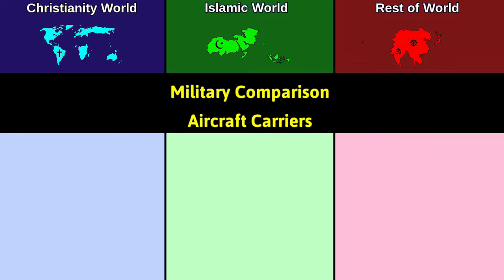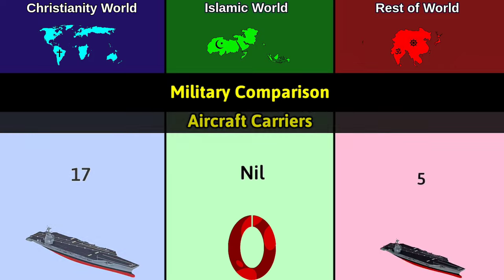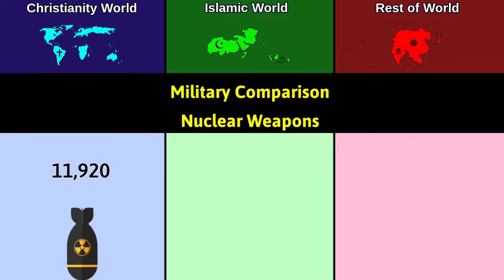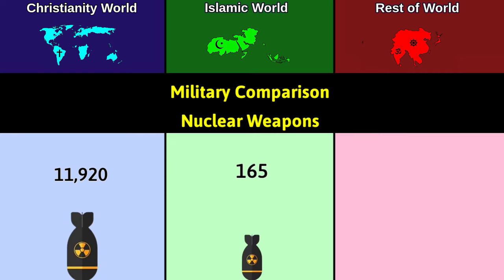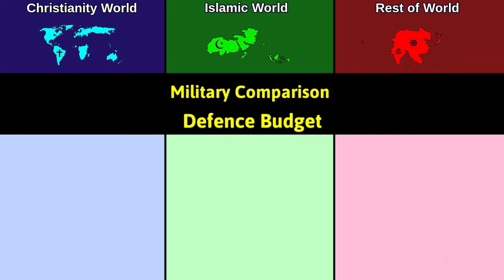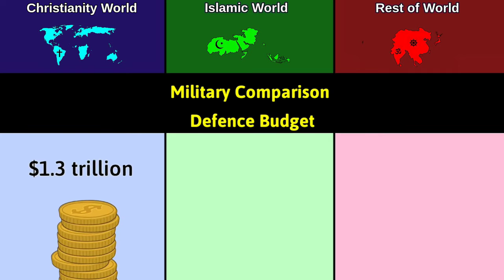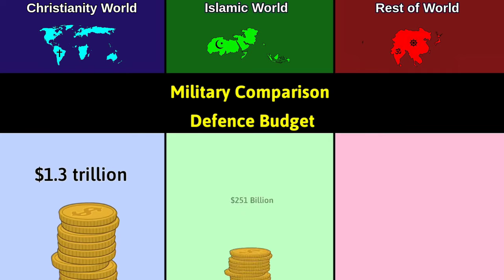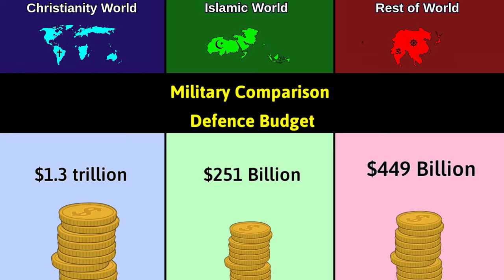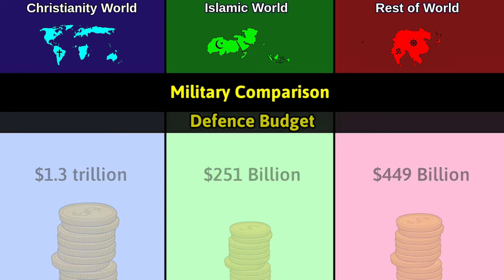Aircraft carriers: Christianity 17; Islam 0; Rest 5. Nuclear weapons: Christianity 11,920; Islam 165; Rest 646. Defense budget: Christianity 1.3 trillion dollars; Islam 251 billion dollars; Rest 449 billion dollars.